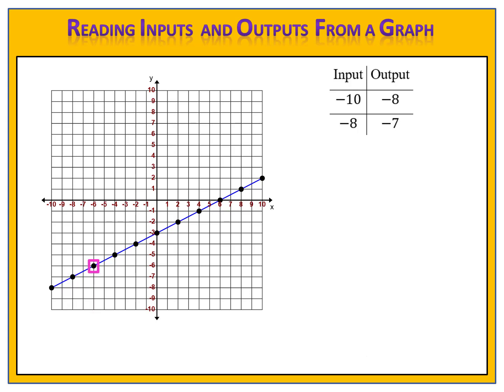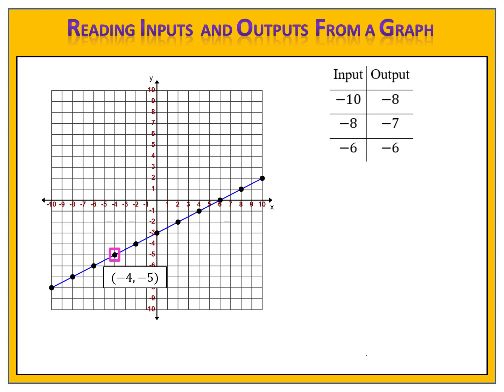Let's continue along to the next point. What are the coordinates of this one? This is the point negative 6 comma negative 6. X is the input and y is the output, so we'll record negative 6 and negative 6 in the input and output table. Let's look at the next point. The coordinates of that point are negative 4 comma negative 5. Negative 4 is the x, which is the input. Negative 5 is the y, which is the output. And so we record that point in the input and output table.